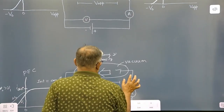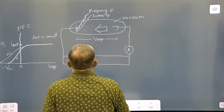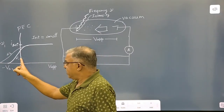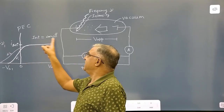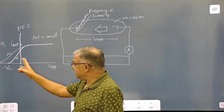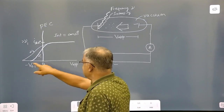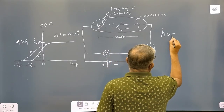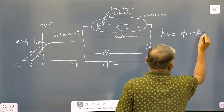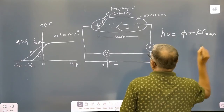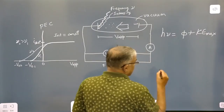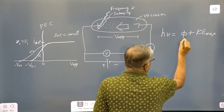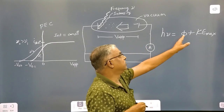Now, looking at this graph, the frequency of light has been increased while keeping the intensity constant. When the frequency is increased, the photoelectric equation shows the relationship between energy and emission. This threshold frequency determines the minimum condition for photoelectric emission.